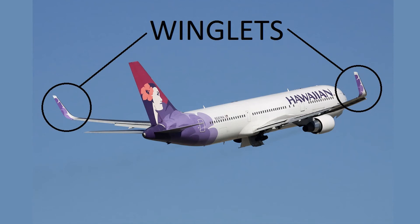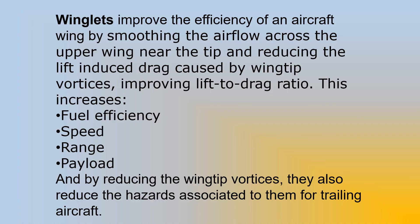Pictured here are winglets on an aircraft, utilized to reduce wing tip vortices. Winglets improve the efficiency of an aircraft wing by smoothing the airflow across the upper wing near the tip and reducing the lift-induced drag caused by wing tip vortices, improving the lift-to-drag ratio. This increases fuel efficiency, speed, range, and payload. And by reducing wing tip vortices, they also reduce the hazards associated with them for trailing aircraft.